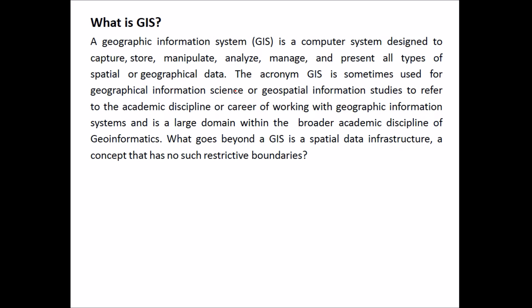What is GIS? This is a different definition. GIS is a computer-based system designed to capture, store, manipulate, analyze, manage and present all types of spatial or geographic data. The acronym GIS is sometimes used for geographical information science or geospatial information studies. The academic discipline of working with GIS falls within the broader domain of geo-informatics. What goes beyond a GIS is a spatial data infrastructure, a concept that has no such restrictive boundaries.